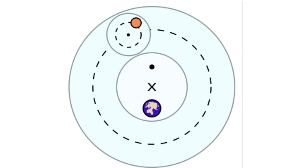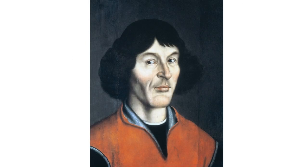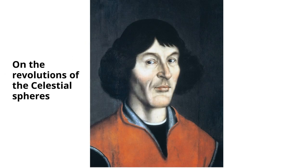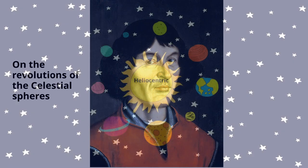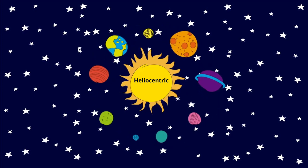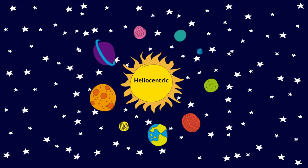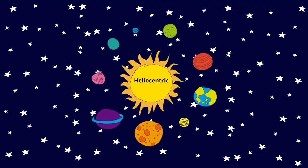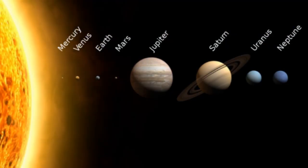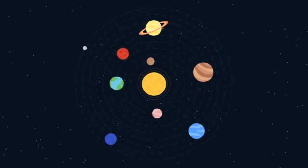This model of the Earth being the center did not sit well with Copernicus, and in 1543 he proposed "On the Revolutions of the Celestial Spheres," in which he explained what many had suspected: that the Sun is at the center of the universe, and that we move on Earth along with the other planets around the Sun. This is called the heliocentric model. He proposed that each orbit was a circle, and the Earth, like other planets, revolved around the Sun.